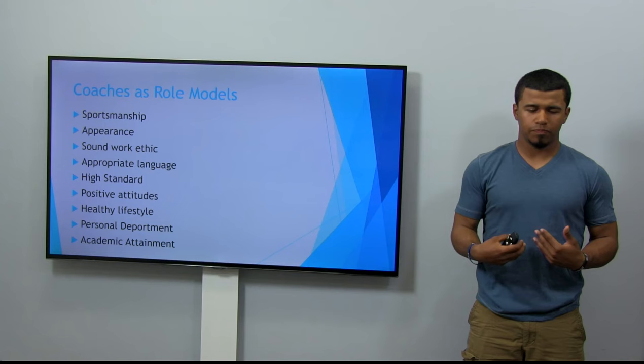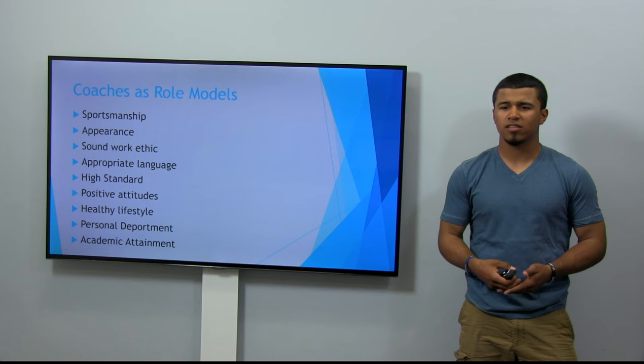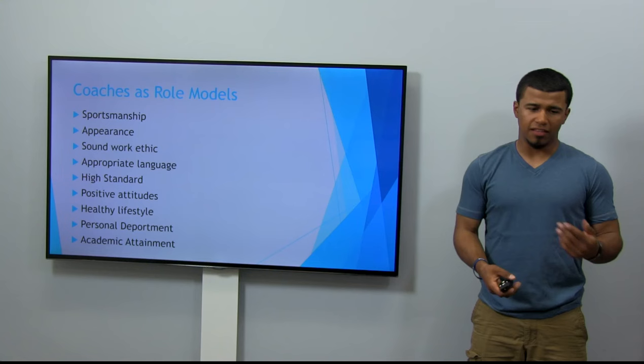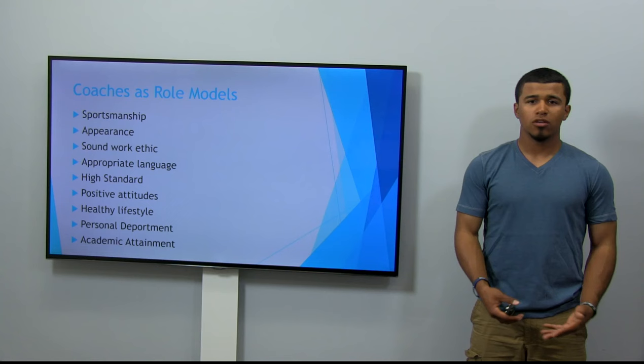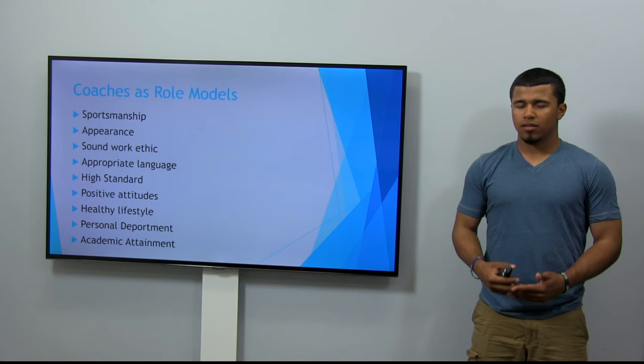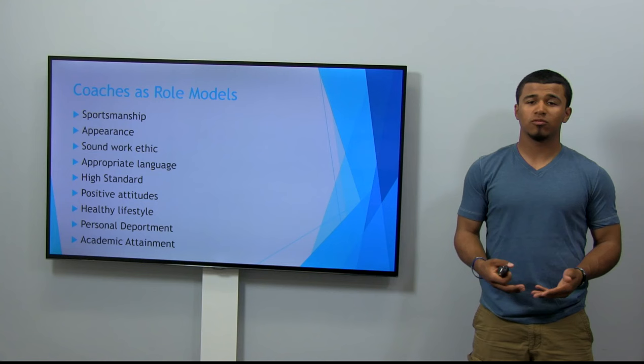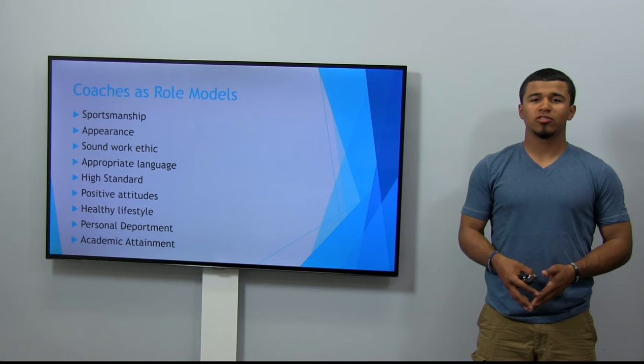For example, with sportsmanship and appearance: you don't only represent yourself when you put that uniform on. You represent your team, your school, and your family. And anything you do off the field as a student athlete is a representation of your coach. Your coach being a role model is something I see as very fitting. As a coach, you spend a lot of time with your players on and off the field, so you have the opportunity to set a high standard and show them things like sportsmanship, appearance, and appropriate language.